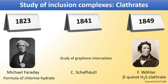In the 19th century, other contributions were made in the history of inclusion complexes. Michael Faraday in 1823 refined the formula of chlorine hydrate. In 1841, C. Schafhaeutl discovered graphene intercalate complexes. In 1849, F. Wöhler prepared a quinol clathrate of hydrogen sulphide.